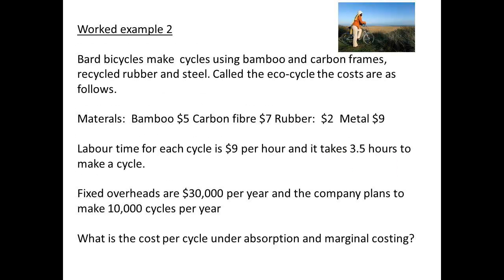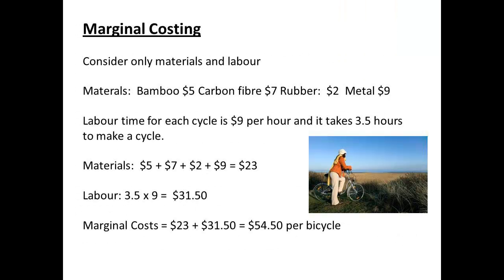Here is a second worked example. Barred Bicycles make an eco-friendly product using bamboo and carbon fibre — and yes, you can actually make a bicycle frame from bamboo and carbon fibre. Several different materials are used. The labour time for each bicycle is 3.5 hours and the cost per hour is $9. We have overheads of $30,000 per year and it is planned to make 10,000 cycles a year. The total for materials is $5 for bamboo, plus $7 for carbon fibre, plus $2 for rubber, and $9 for metal, giving a total of $23. For labour: 3.5 times $9 gives $31.50. This gives a total for marginal costing of $54.50 for each bicycle produced.